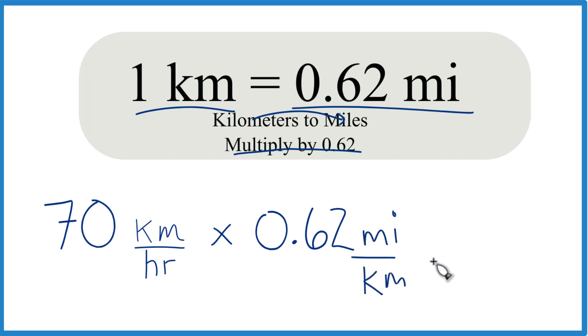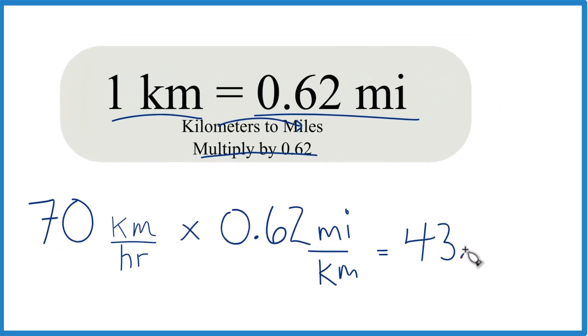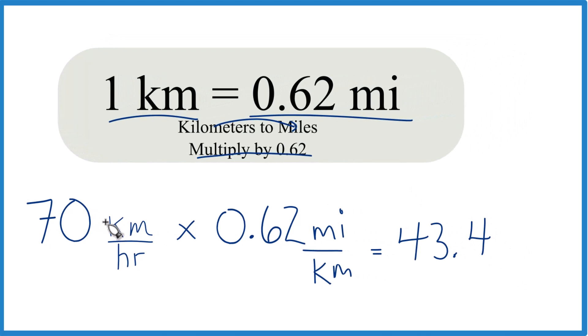So 70 times 0.62, that equals 43.4. And because we have kilometers here and here, they cancel out, we're left with miles per hour. That's what we're looking for.